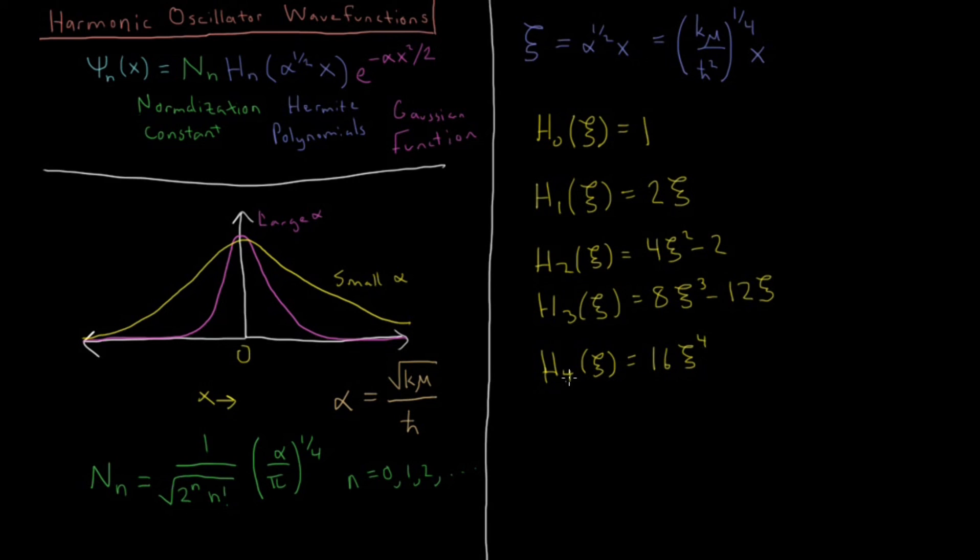And lastly, h3 is 16xi to the 4th minus 4xi squared plus 12. Okay, so that's just an example of what some of these polynomials are.